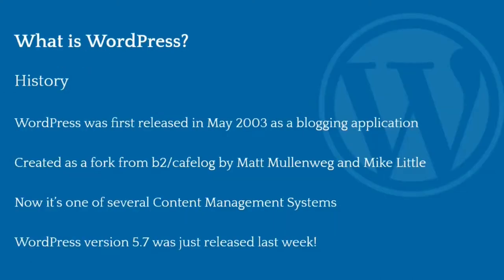A little bit of history. WordPress was first released in May 2003 as a blogging application. It was created as a fork — in software terms, they took the source code, made a copy of it, started changing it, and made it into a new branch of that software. It started out as a piece of software called B2 Cafe Log, but the developer of that software stopped being able to maintain it in 2003. So Matt Mullenweg said he would like to continue developing it, and Mike Little jumped in and said he'd be really interested in helping. And so that was the beginning of WordPress — they started their own blogging software, which is the start of what is now WordPress.org.